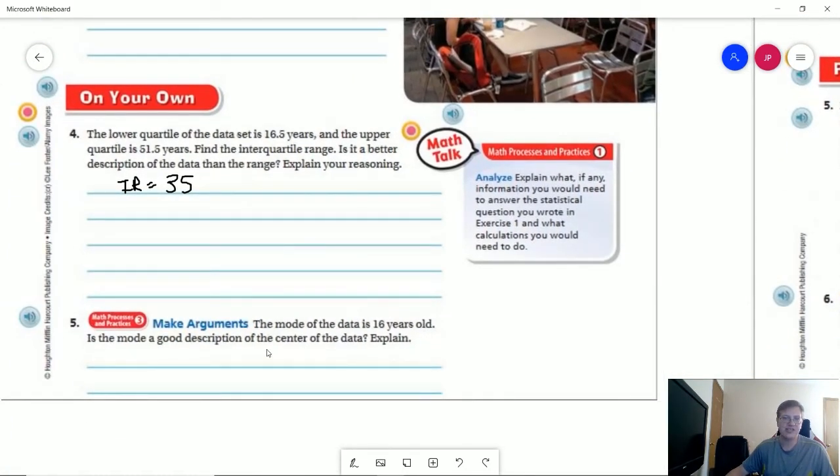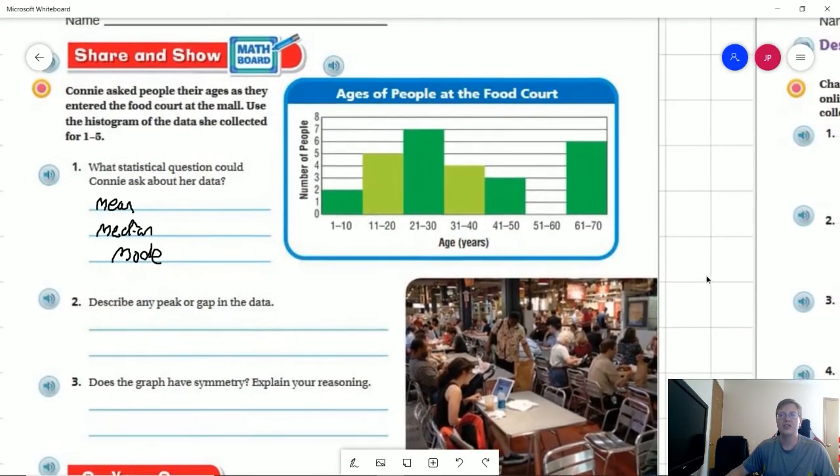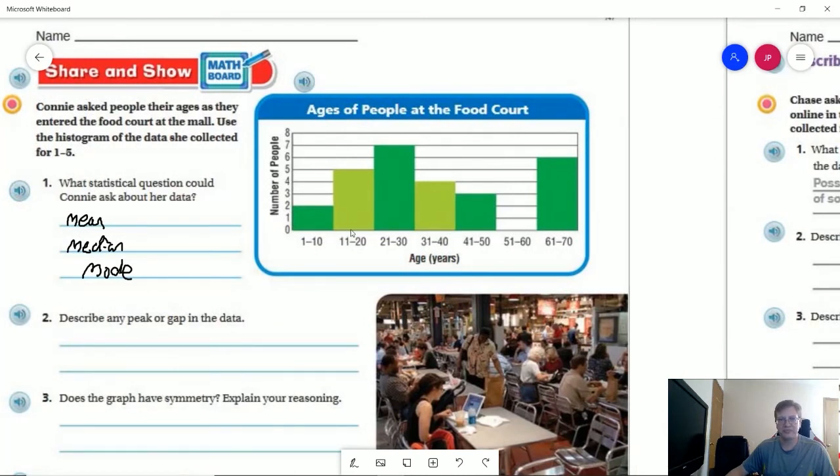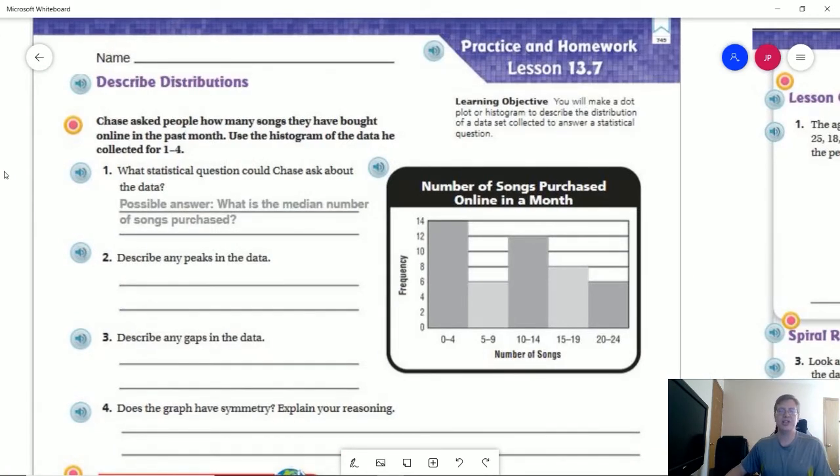Number five, the mode of the data is 16 years old. Is the mode a good description of the center of the data? Absolutely not. The reason being is that it's the most frequently repeated number in something that's actually the third highest inside the third highest range. That's not a good representation of our average age. I don't think we would ever want to try to use the mode unless it is involved in an overwhelming peak in our data graph. Now let's take a look at our homework problems.